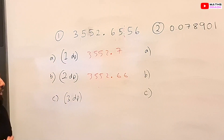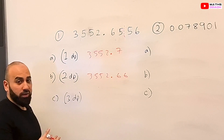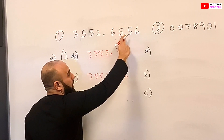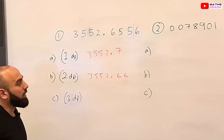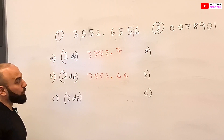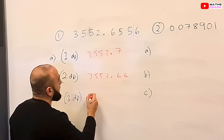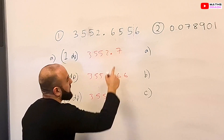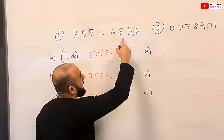Now we're going to round the number to three decimal places. We haven't done a question with three decimal places yet, but it's the same idea. We draw a line after the third number after the decimal point and look at the number next to it. Because it is 5 and above, we'll increase the 5 to a 6. So our number is 3552.656.